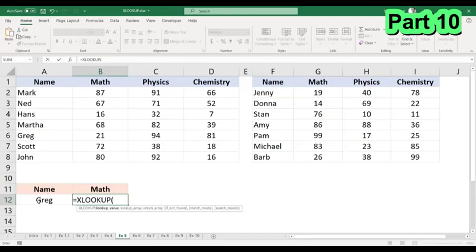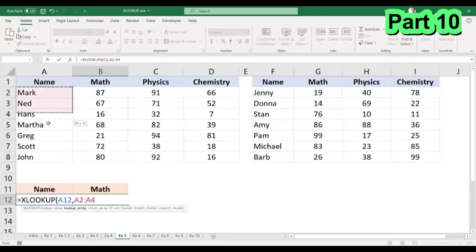So in this case, my lookup value would be cell A12, which is the name. My lookup array would be this range here, and my return array would be these values here for math.